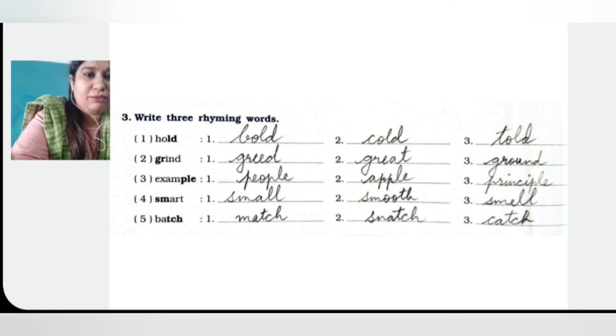And the fifth one is B-A-T-C-H — batch. We need T-C-H at the end. So M-A-T-C-H — match, S-N-A-T-C-H — snatch, and C-A-T-C-H — catch.